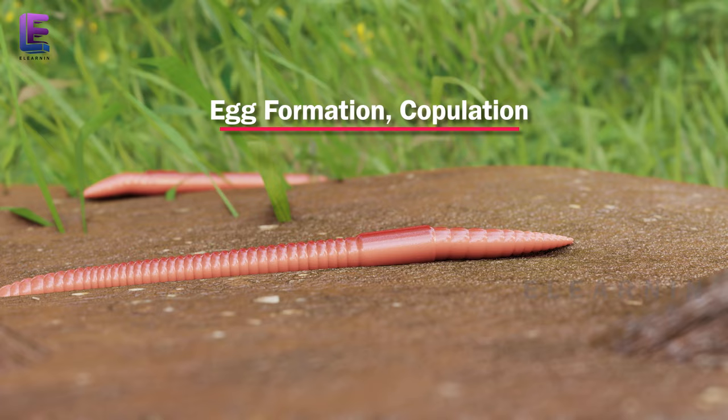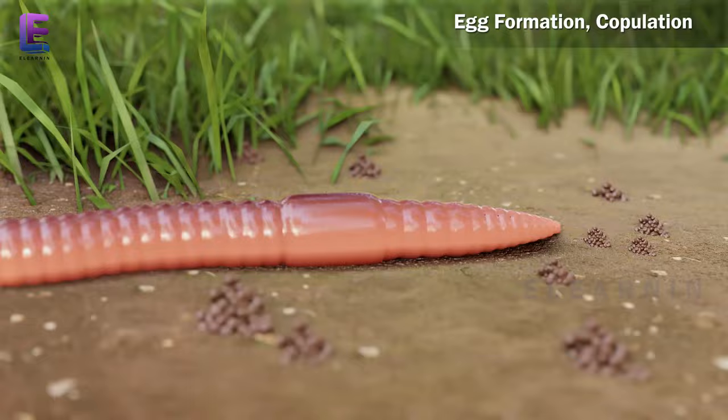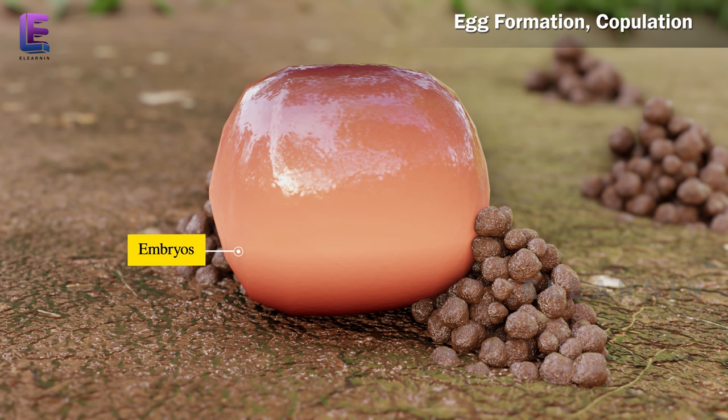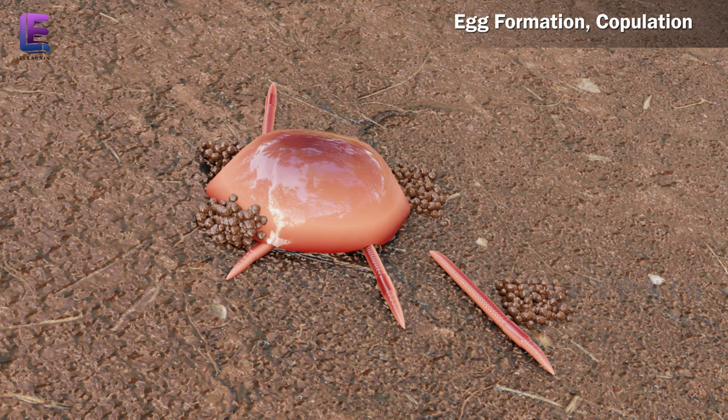Egg formation and copulation: Mature sperm and egg cells and nutritive fluid are deposited in cocoons produced by the gland cells of the clitellum. Fertilization and development occur within the cocoons, which are deposited in soil. The cocoon holds developing embryos. After about three weeks, each cocoon produces an average of four offspring. Development of earthworms is direct, meaning there is no larva formed.